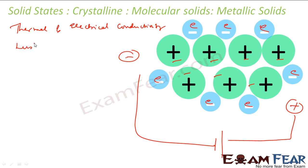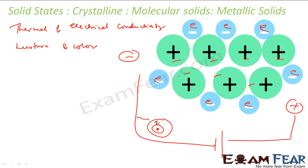The shine, lustre, and color of metals is also because of the free electrons. When light falls on the free electrons, the electrons jump to higher orbitals. When they come back down, they radiate light back — they glow. This is similar to what we discuss in the atoms chapter. The electrons absorb light, jump to higher orbitals, then return to their normal orbital and emit light. That is why metals have lustre and colors.